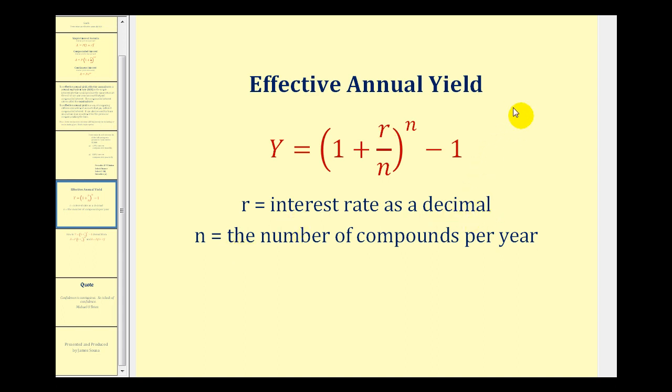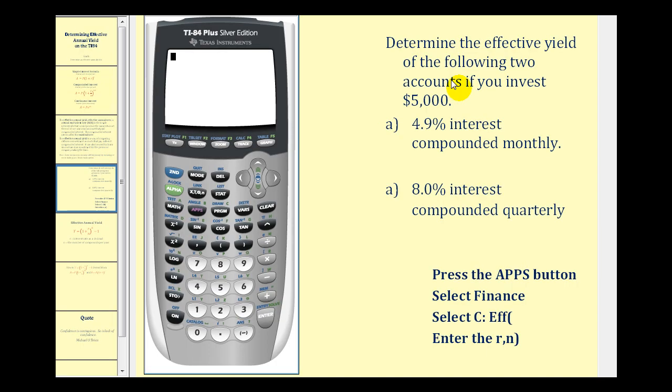But for this video we're going to show how to determine the effective annual rate on the graphing calculator. Let's look at our examples. You're asked to determine the effective annual yield of the following two accounts if you invest five thousand dollars. One thing you'll notice about the formula is it doesn't require the initial amount or the principal.